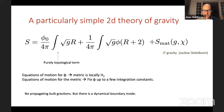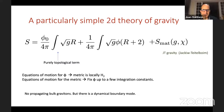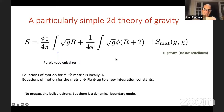In nearly AdS₂, you have AdS₂ but some scalar fields — some property of the compactification manifold — are changing slowly. For near-extremal black holes, there is a very long throat with AdS₂ geometry, but the throat doesn't have a completely constant radius. The area of the throat can be viewed as φ₀ + φ, where φ₀ is much bigger than φ, but this little φ is still varying — there's a small change in the radius of the throat.